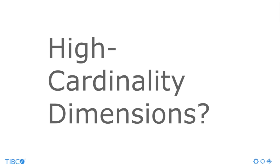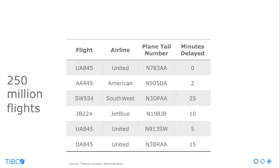So what about high cardinality dimensions? Let's look at an example table to help us understand this concept. We've got a table with 250 million flights. Flight is the flight or route, so there are not a ton of these — there are two and a half thousand flights, so you might consider this a low cardinality dimension. Airline is also a low cardinality dimension; there are only 35 of these in our data set.